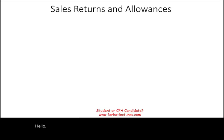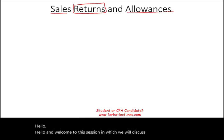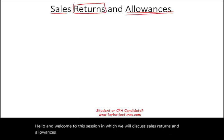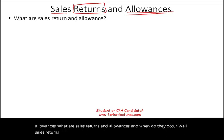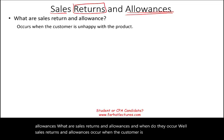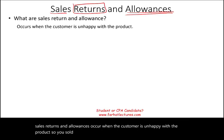Hello and welcome to the session in which we will discuss sales returns and allowances. What are sales returns and allowances and when do they occur? Well, sales returns and allowances occur when the customer is unhappy with the product. So you sold the product to a customer and they are unhappy with the product.